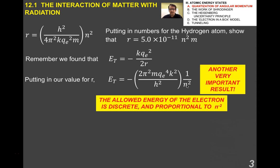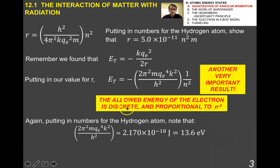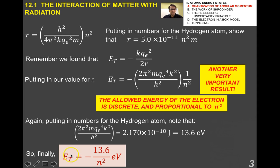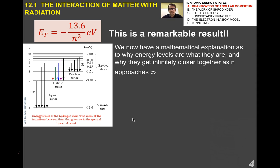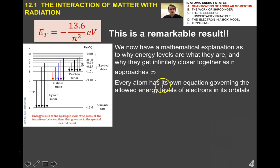The allowed energy of the electron is also discrete. It comes from the fact that the actual radii of the orbits are discrete, which gives rise to the idea of atomic orbitals. In this class, we talk about different energy levels corresponding to different orbitals. Putting in numbers for the hydrogen atom, everything ends up being 13.6 electron volts. So the total energy is negative 13.6 divided by N² electron volts. That's where those energy level diagrams come from. The next level, N equals 2, would be negative 13.6 divided by 4. This is the mathematical explanation for why energy levels get infinitely closer together as N approaches infinity, due to that 1 over N² term.